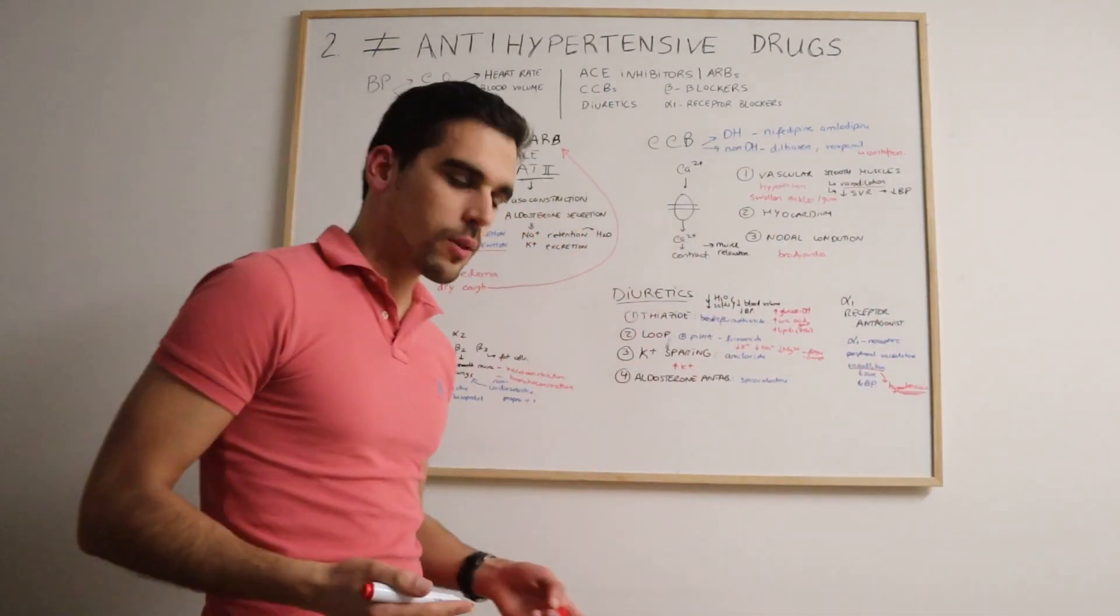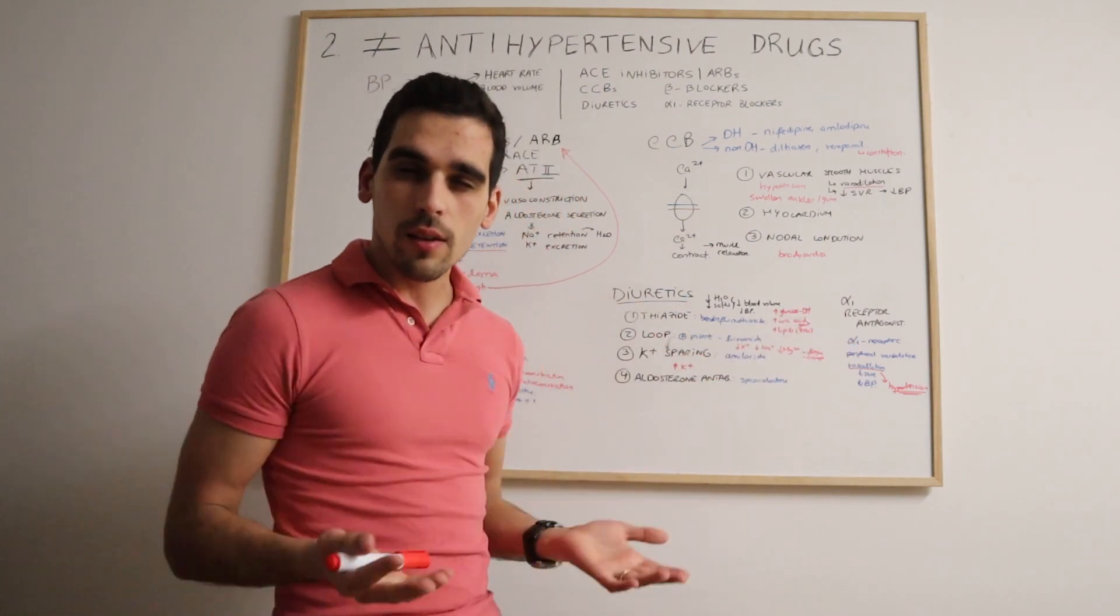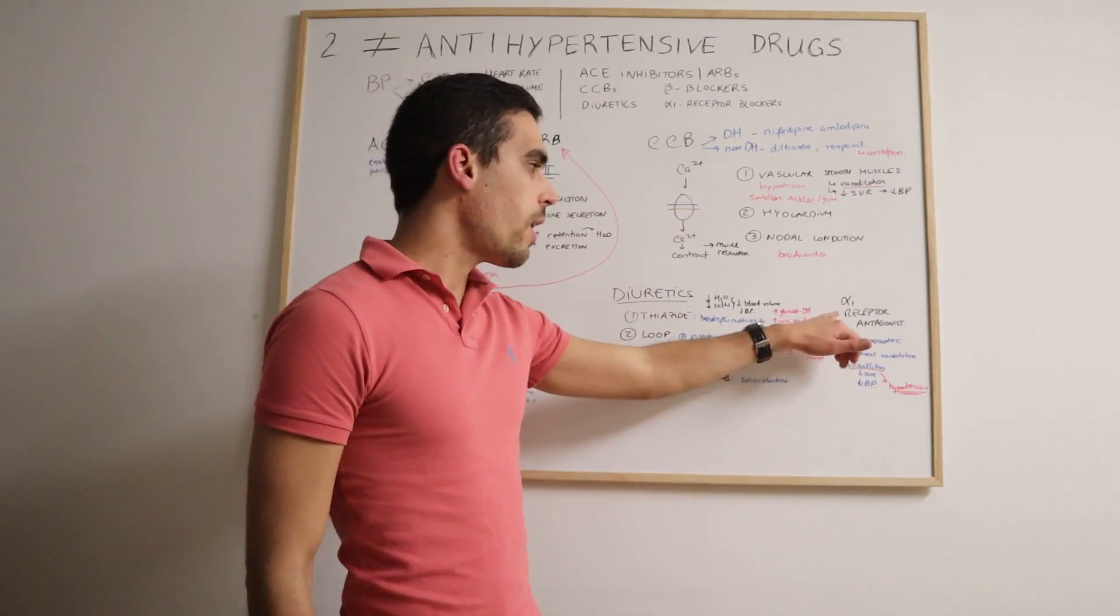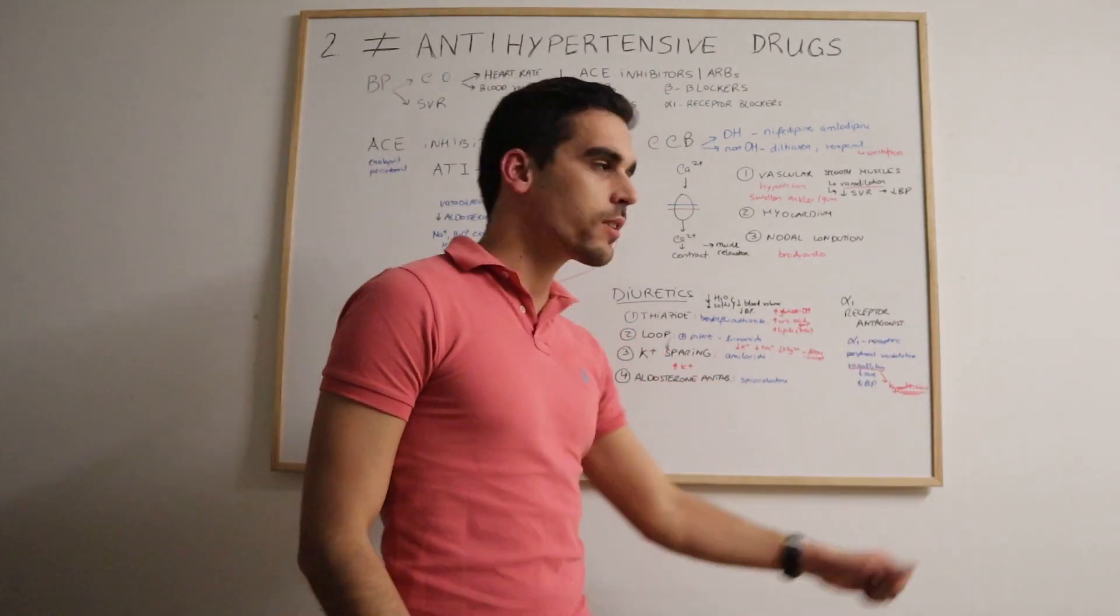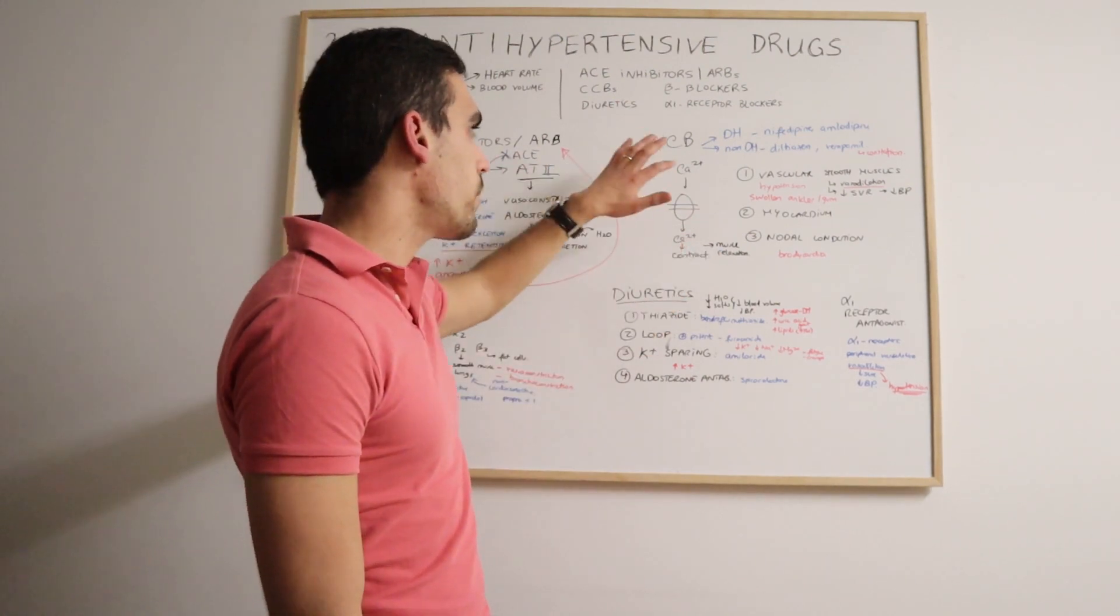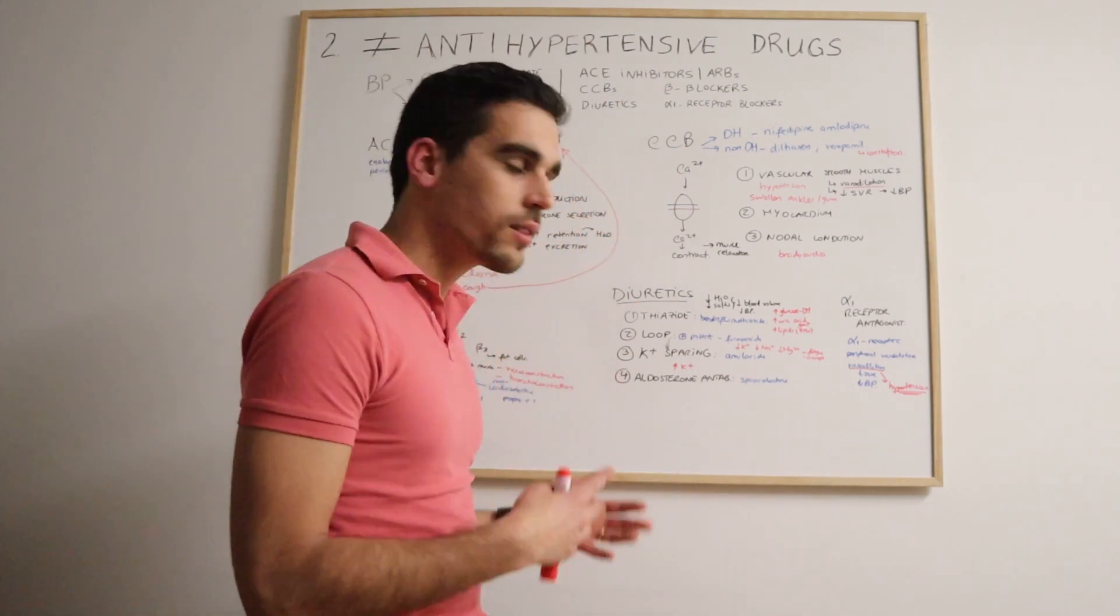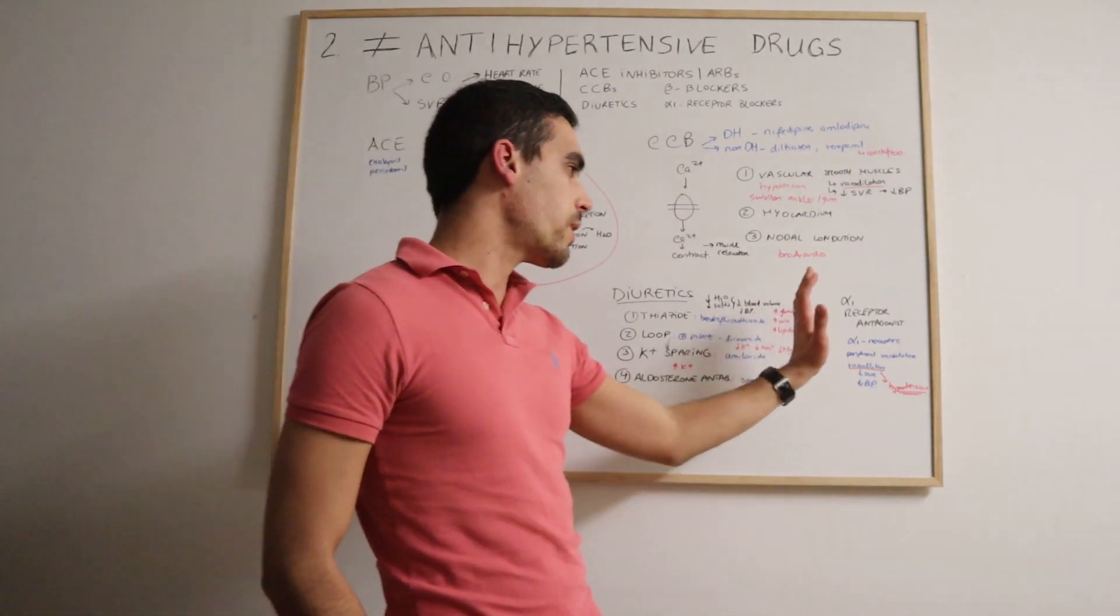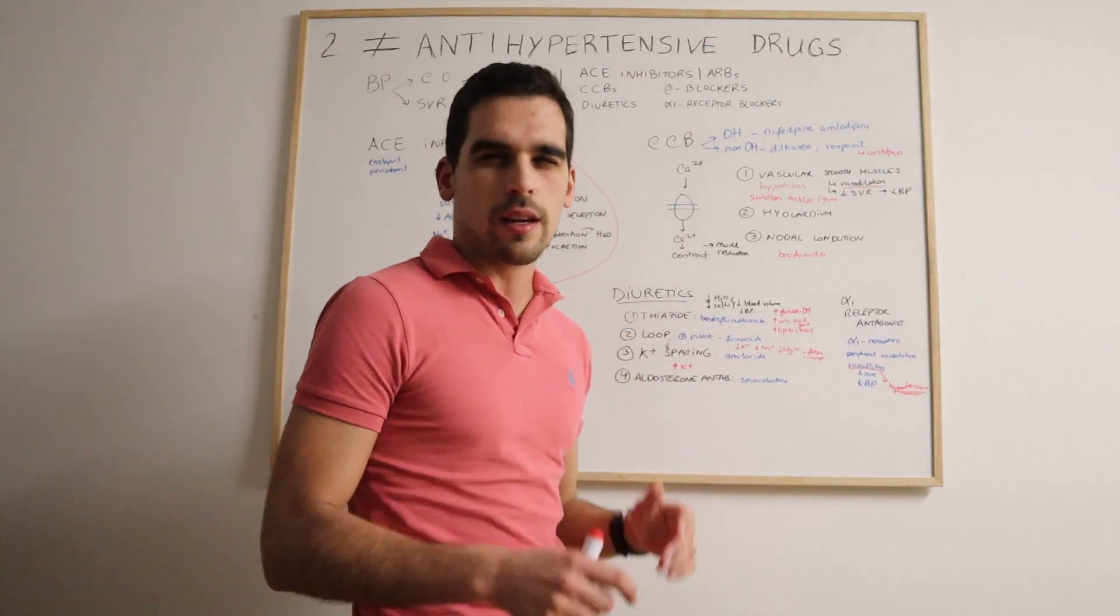If there are symptoms of fainting or anything, it might be related to it. The last thing to say is that alpha-1 receptor antagonists are normally like a last resource. If those four are tried - if the ACE inhibitors, ARBs, calcium channel blockers, beta blockers, and diuretics are all tried and still is not enough - sometimes we can associate one alpha-1 receptor antagonist. But that's like a last resource.